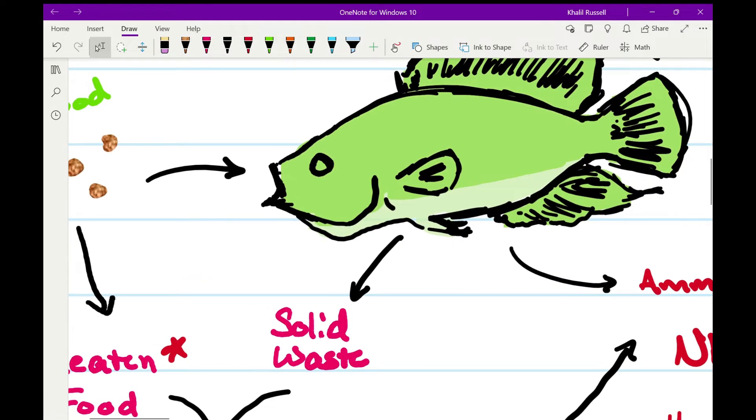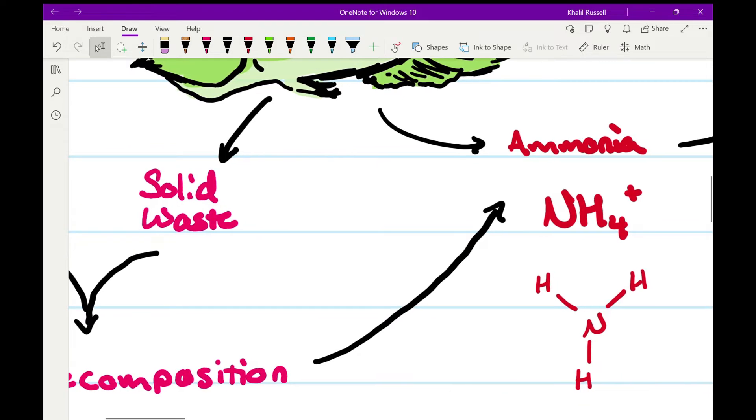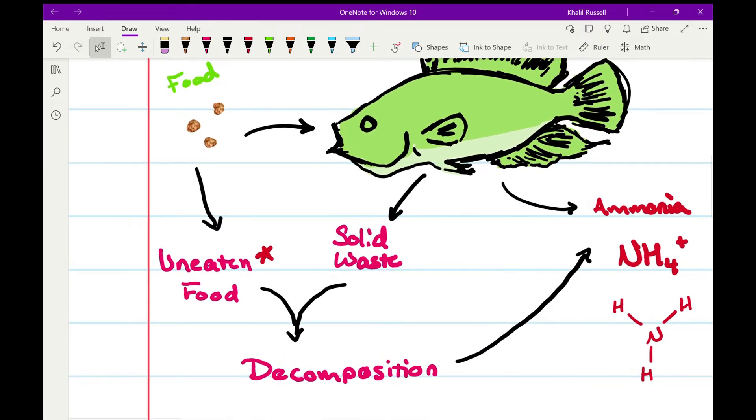So you put food into the aquarium, the fish eat the food. Fish can either eat the food and turn it into waste, turn into ammonia by peeing it out, or the food goes into the fish, becomes solid waste. That solid waste decomposes and produces ammonia.